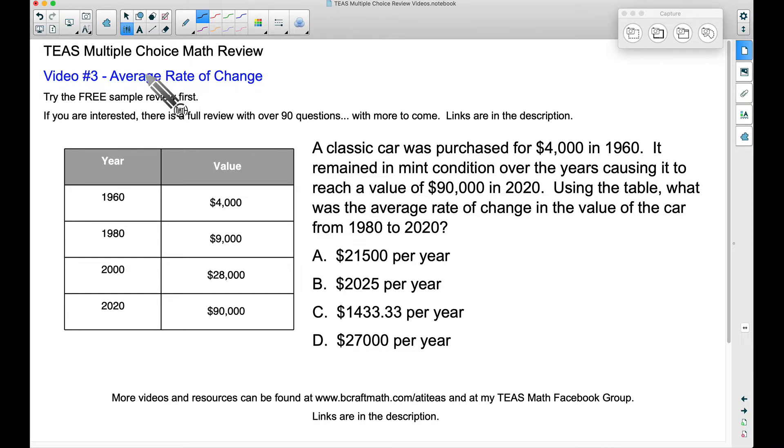So in this example, the average rate of change. We have a classic car that was purchased for $4,000 in 1960. It remained in mint condition over the years causing it to reach a value of $90,000 in the year 2020. Using the table, what was the average rate of change in the value of the car from 1980 to 2020?